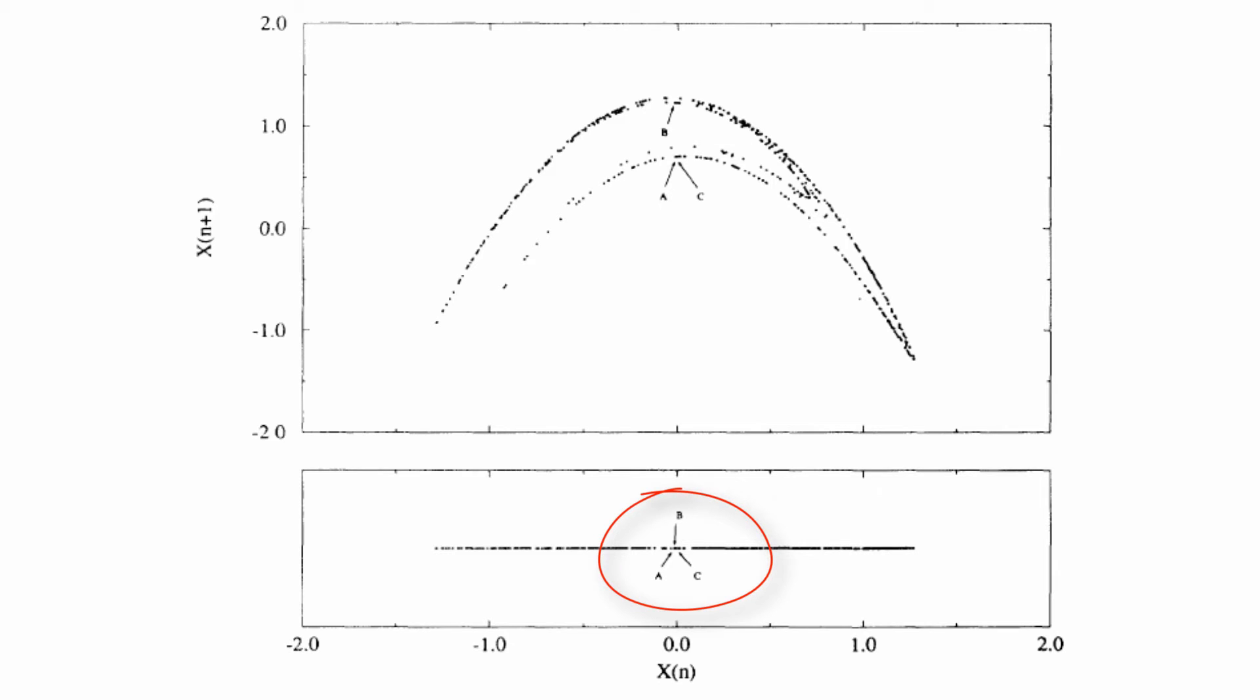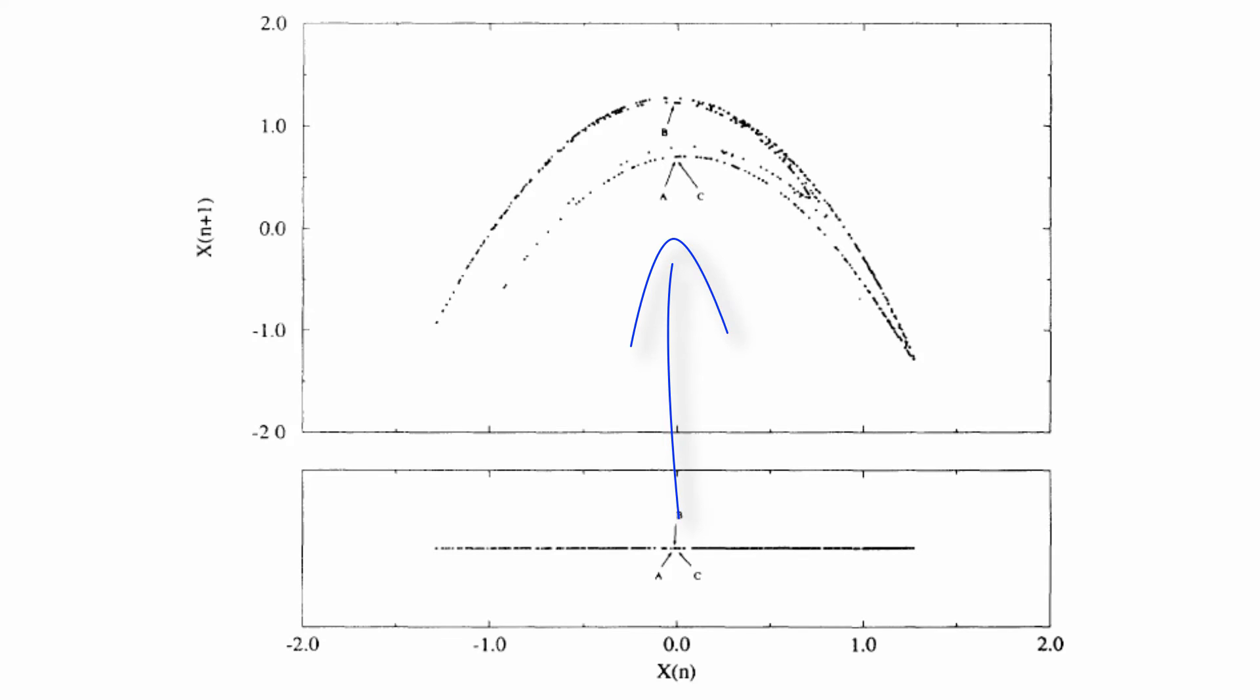If we embed the attractor in two dimensions, that is, we plot x_n versus x_{n+1}, or equivalently x(t), x(t+1), we see that a and c are still neighbors, but now b has been moved to the top curve. This inflation from dimension 1 to dimension 2 has caused a and b, and c and b, to become false neighbors.